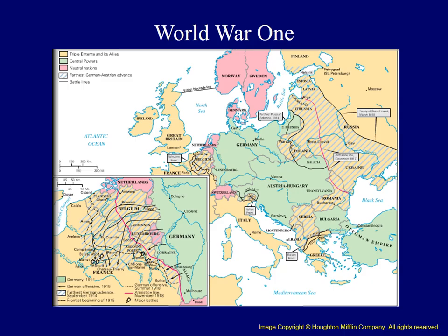This map provides a visual aid for the two major military coalitions within World War I. The yellow nations identify the Allied powers, and the green identify the Central powers.